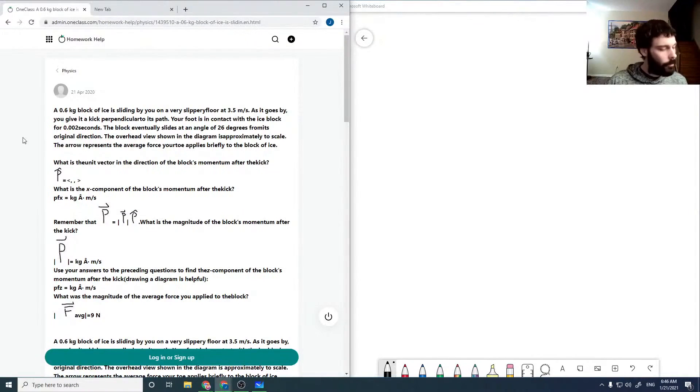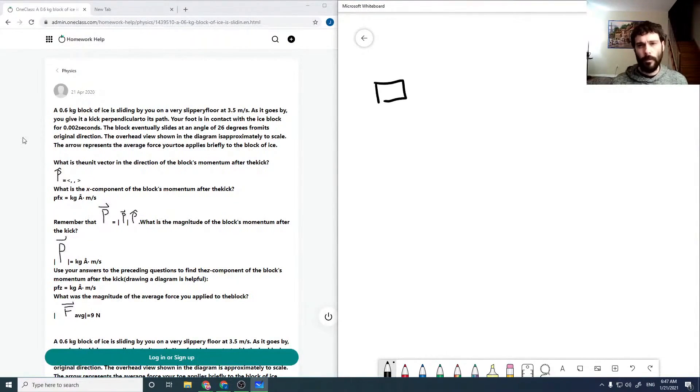A 0.6 kilogram block of ice is sliding by you on a very slippery floor with velocity v. As it goes by we give it a kick, so we give it some F delta t.